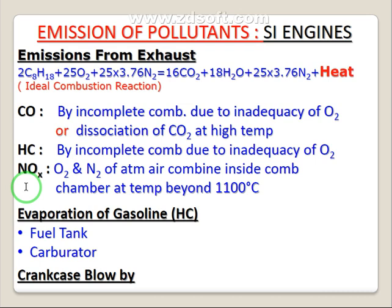Carbon monoxide forms when there is insufficient oxygen in contact with carbon, leading to incomplete combustion. There are two reasons for CO formation: first, insufficient oxygen leads to incomplete combustion and formation of CO; second, carbon dioxide is unstable at very high temperatures, so it disintegrates into carbon monoxide and oxygen. So CO forms either due to insufficient oxygen or due to very high temperature causing dissociation of carbon dioxide.